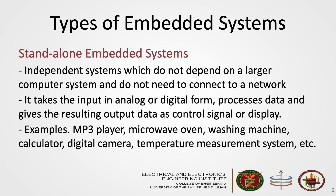The first type is the standalone embedded system. These are independent systems which do not depend on larger computer systems and do not need to connect to a network. Examples are MP3 players, microwave ovens, washing machines, calculators, digital cameras, temperature measurement systems, and many more. These devices take input in analog or digital form, process the data according to what they were programmed to do, and then output the results as a display or control to another part of the system.